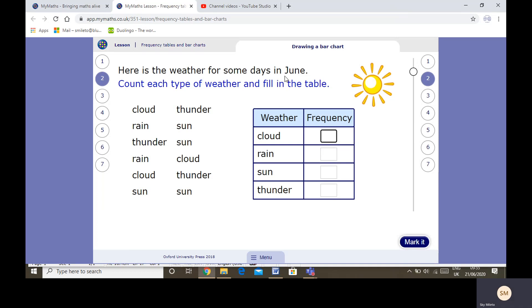So here's some type of weather in June. I want you to see if you can count the numbers up. I'm going to do it too. I can count 3 clouds, 2 rains, 4 suns, and 3 thunders. Let's see if I've got them right. Well done if you too got that.